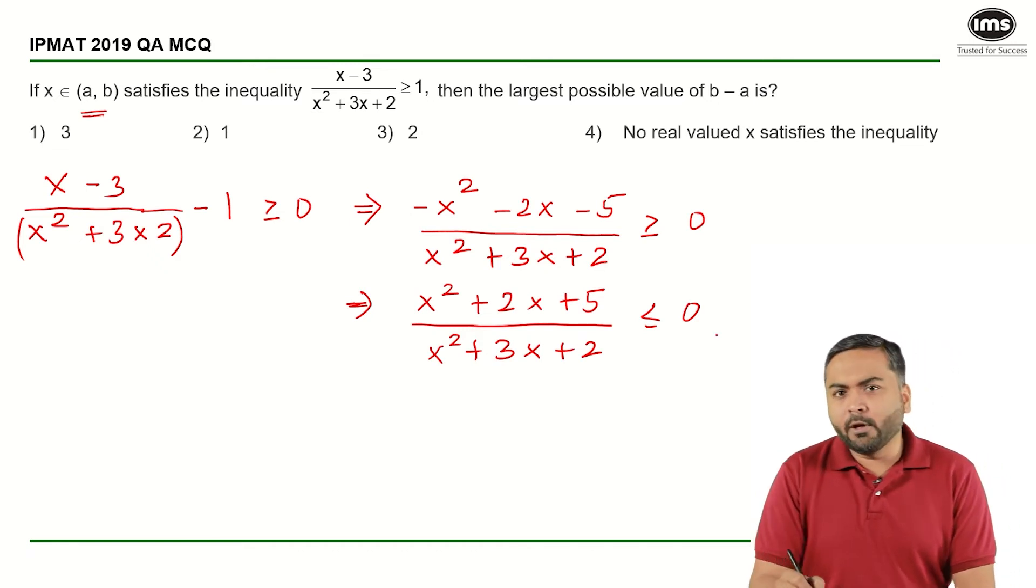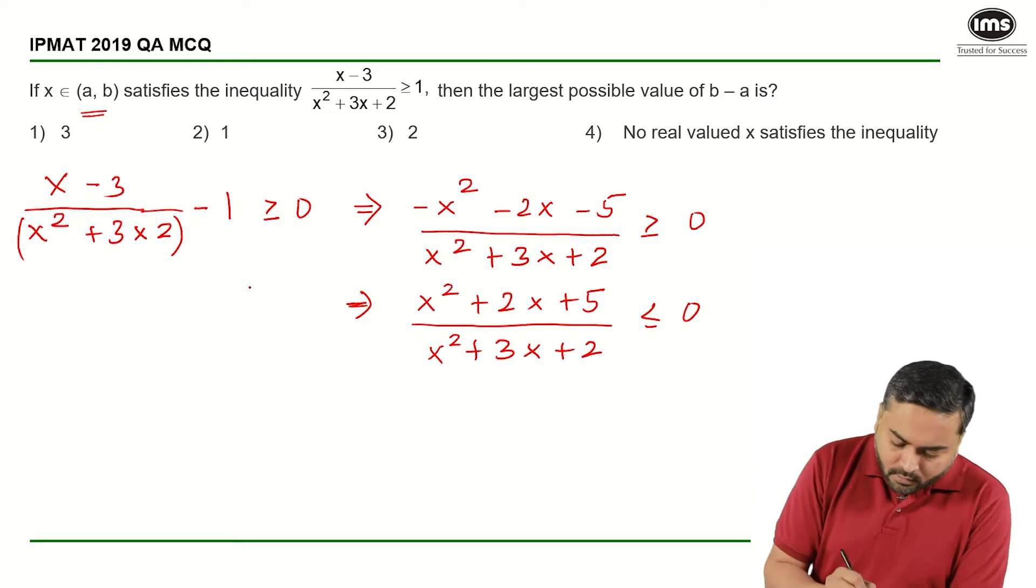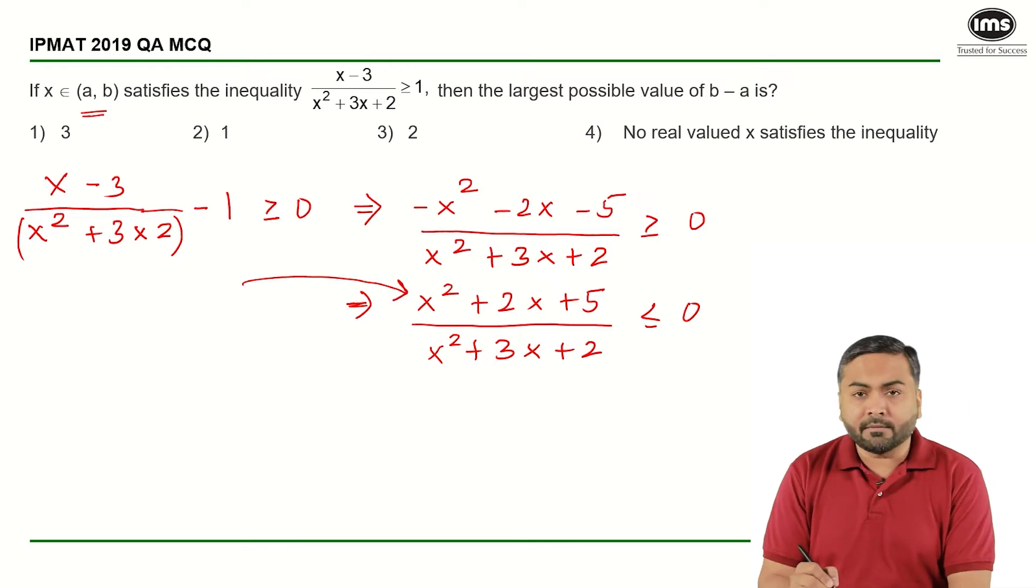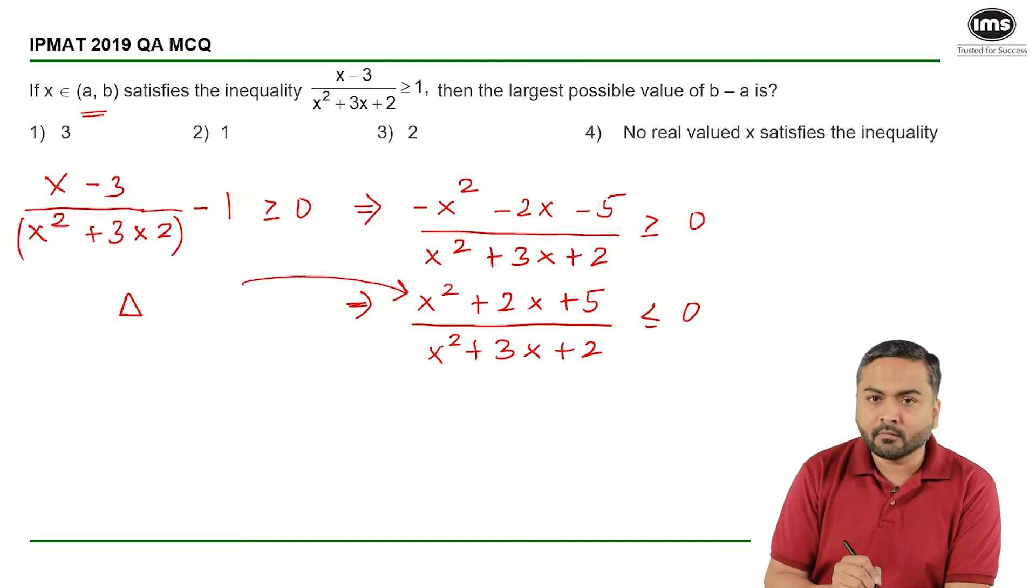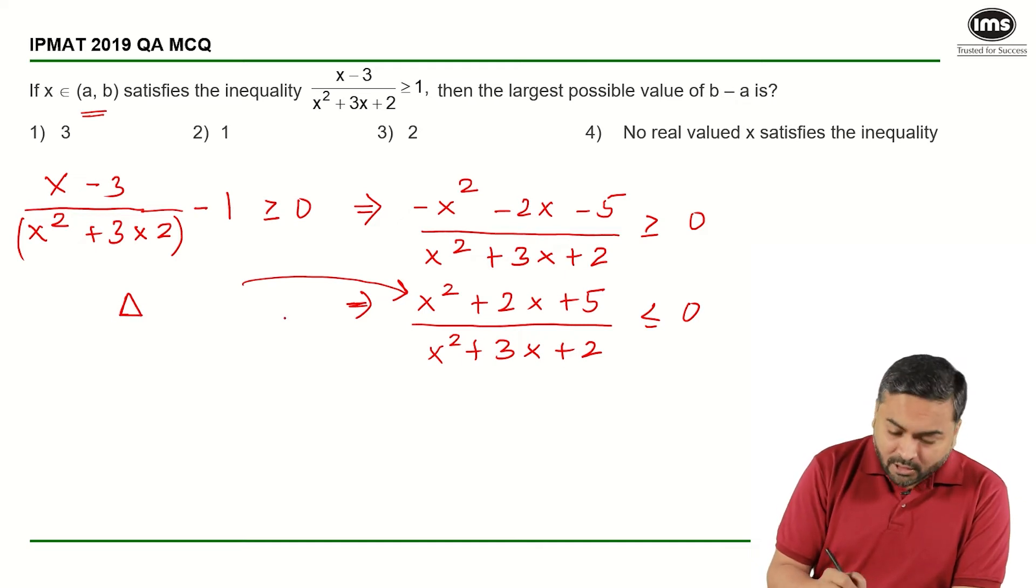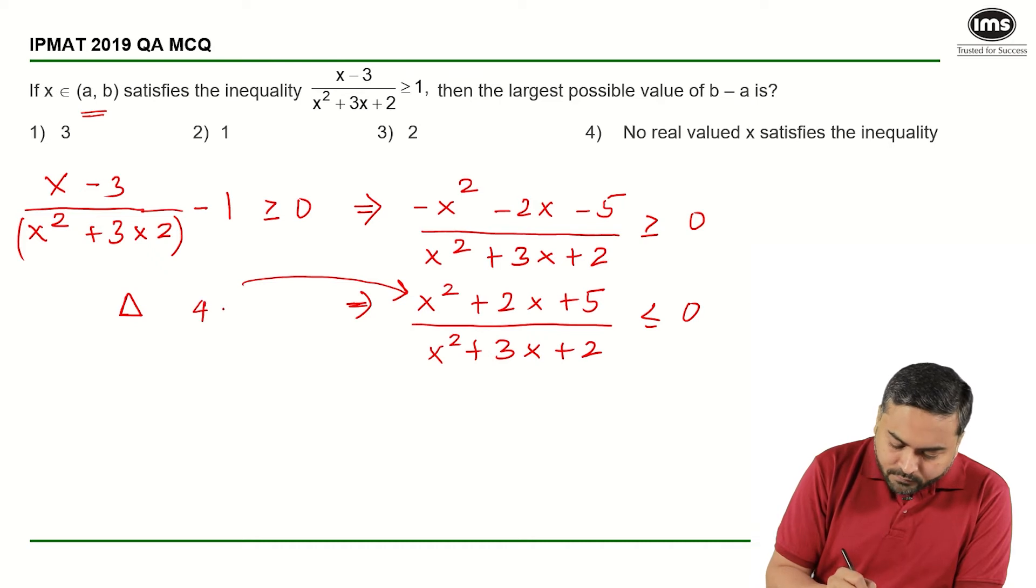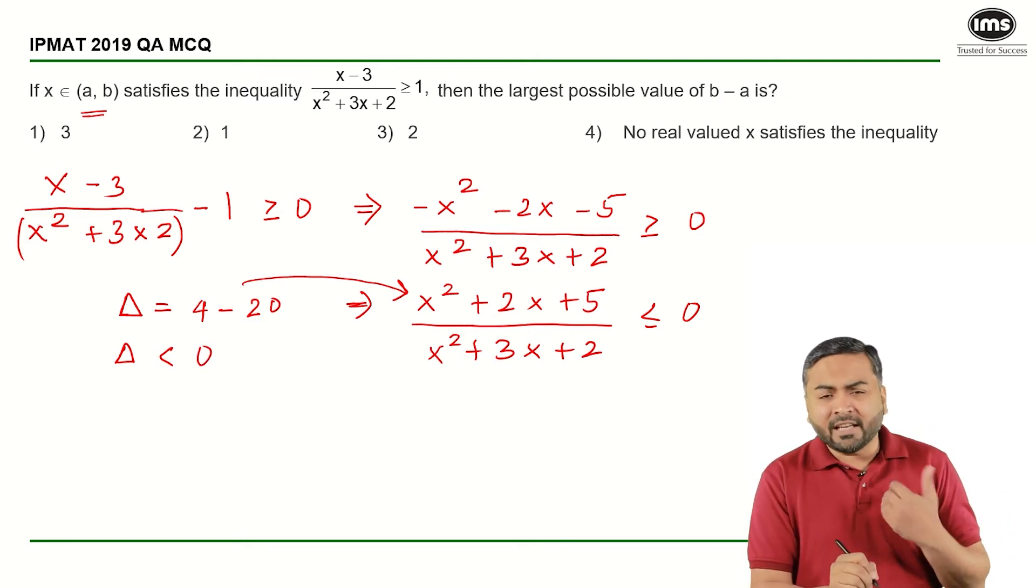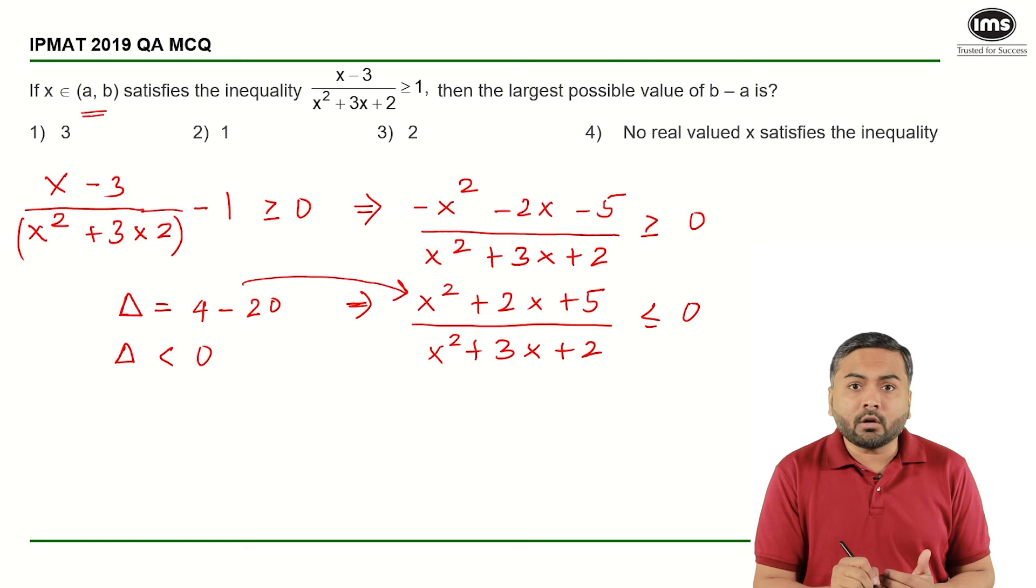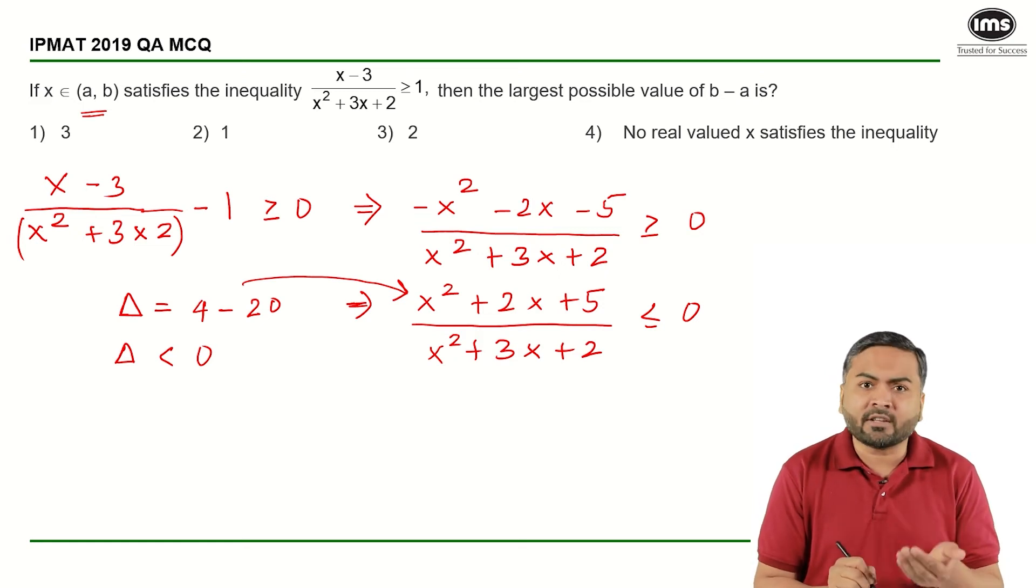Now, if you observe very carefully, the discriminant for the numerator, that is delta, is nothing but 4 - 4ac, that is 4 - 20. So the delta is basically negative, which means if delta is negative, the roots are not real and hence they lie above the x-axis.